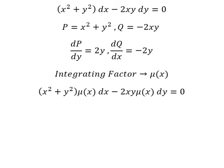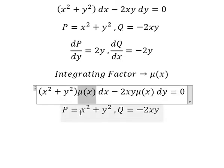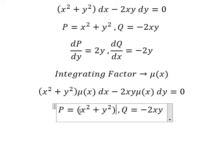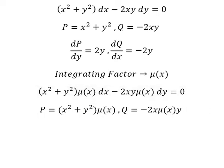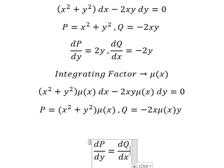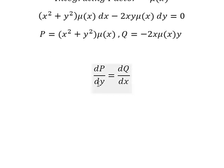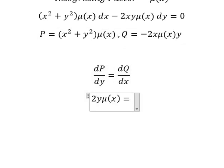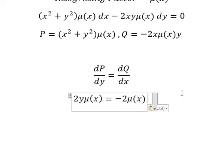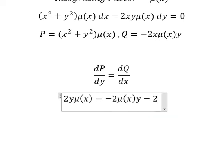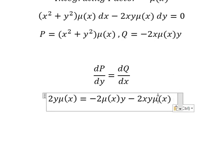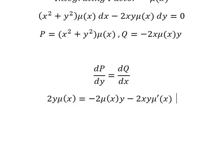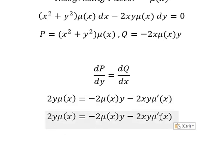Now we create the new equation in here. We want this one to equal this one. So if we take the first derivative of y we have two y times mu of s. For this one we have negative two mu of s times y, and we have negative two x y times mu of s with the first derivative in here. So we simplify two y, two y from both sides.